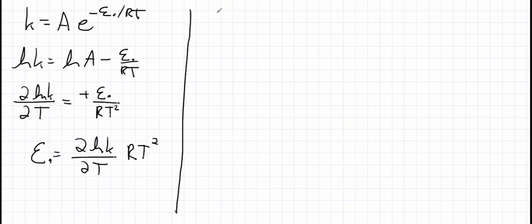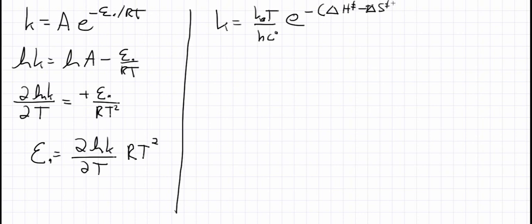We can use this relationship because we can find this derivative using our Eyring equation formulation. We said k is equal to kT over hC times e to the negative delta G double dagger, which is also delta H minus T delta S double dagger, all over RT. Over here on the left we have the Arrhenius equation, and over here we have the Eyring equation — we're going to combine them to develop a relationship between activation energy and activation enthalpy.